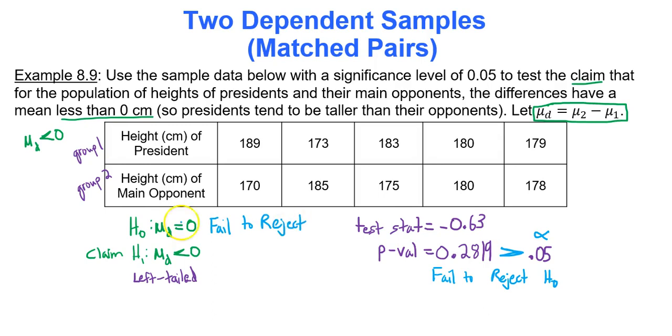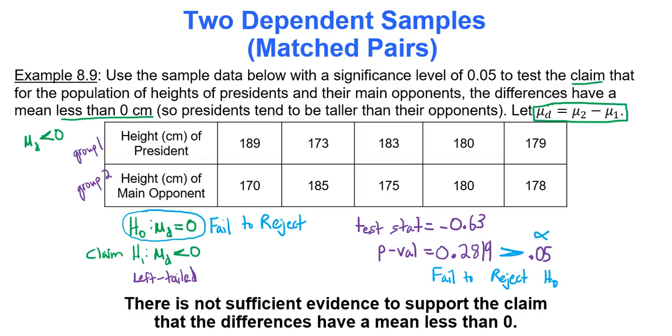We fail to reject the null hypothesis, meaning we can't even look at the claim and consider it. We're stuck with the null hypothesis. So there's not evidence to support our claim here. We say there is not sufficient evidence to support the claim that the differences have a mean less than 0, which seems to be silly anyway, to say presidents tend to be taller than their opponents. I don't think there's any sort of relationship there.